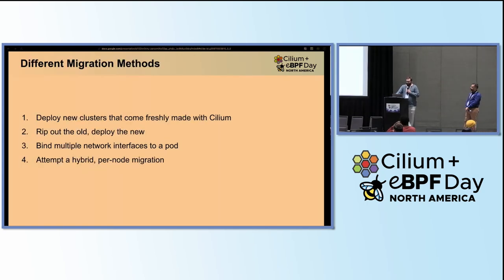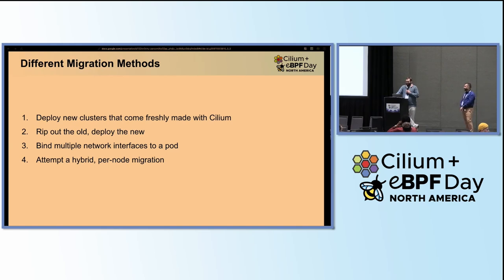The migration methods that we considered — this list is fairly self-explanatory, but this is what we came up with when we were just brainstorming how we could do it. Obviously, the simplest one as a platform engineer is to just deploy new clusters and make the other people do the work. Theoretically, you could just uninstall your existing CNI and install the new one, though there are fairly unpredictable things if you go that route. We also had the idea of binding multiple network interfaces using Multus. And lastly, attempting to do a hybrid migration using Cilium's per-node configuration feature that was released in Cilium 1.13.